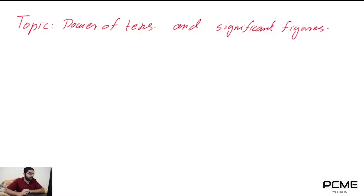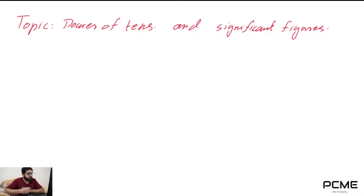In today's video, I will be discussing two topics. The first one is power of tens and the second one will be significant figures. In the very first chapter of units and measurements, you basically learn about how to write very large numbers or very small values of physical quantities in scientific notation, also known as the powers of tens. It's basically a very short way of writing very large or very small numbers.